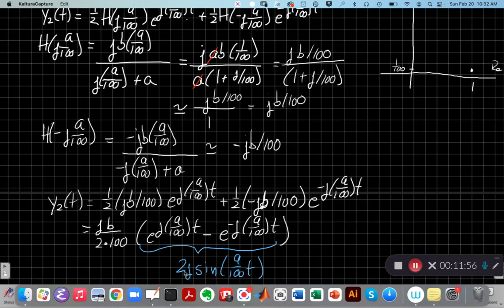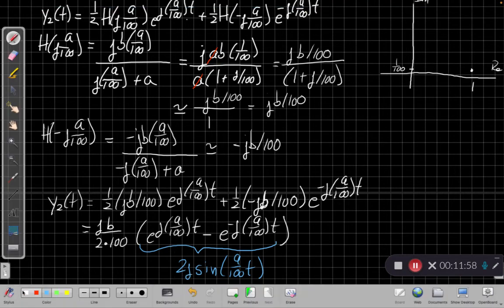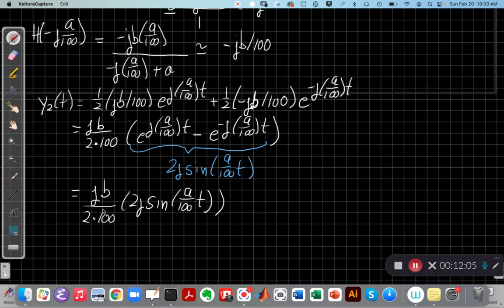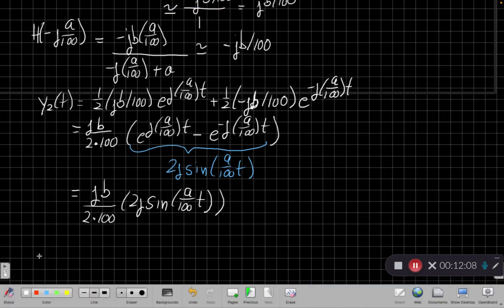And so I have e^(j something) minus e^(minus j something), and I know what's going on in there is 2j times the sine. So using our Euler's, I get 2j sine here, and I can plug that in. I have the twos will cancel. So now if I look at this, I have the twos cancel and the j's multiply together to make a minus 1. And this j times j becomes j squared, which is minus 1. And so I'm left with minus b/100 times sine of that.